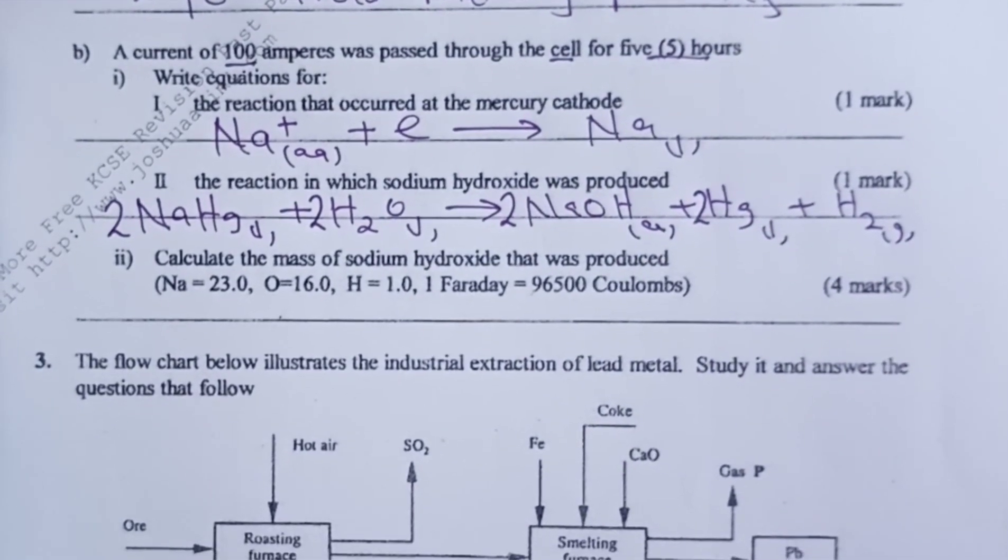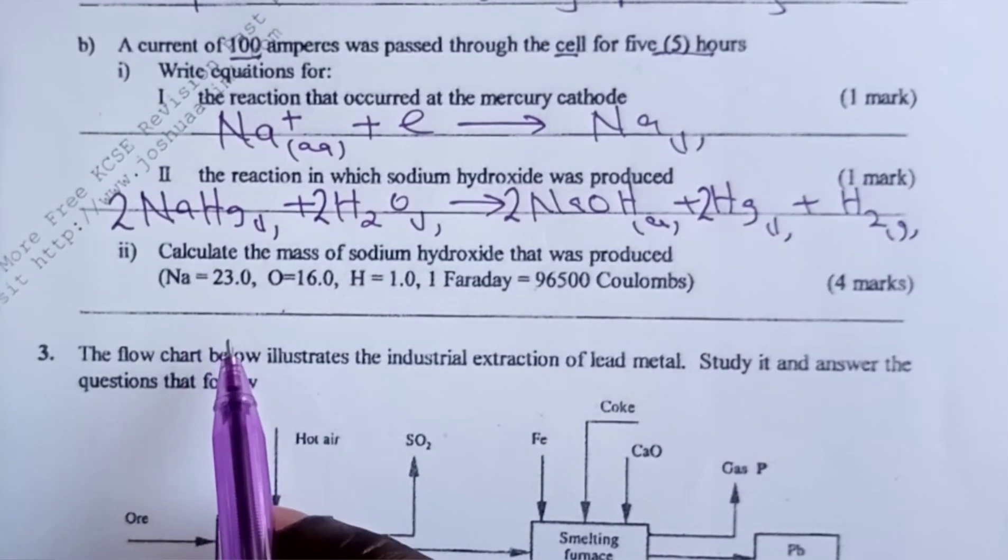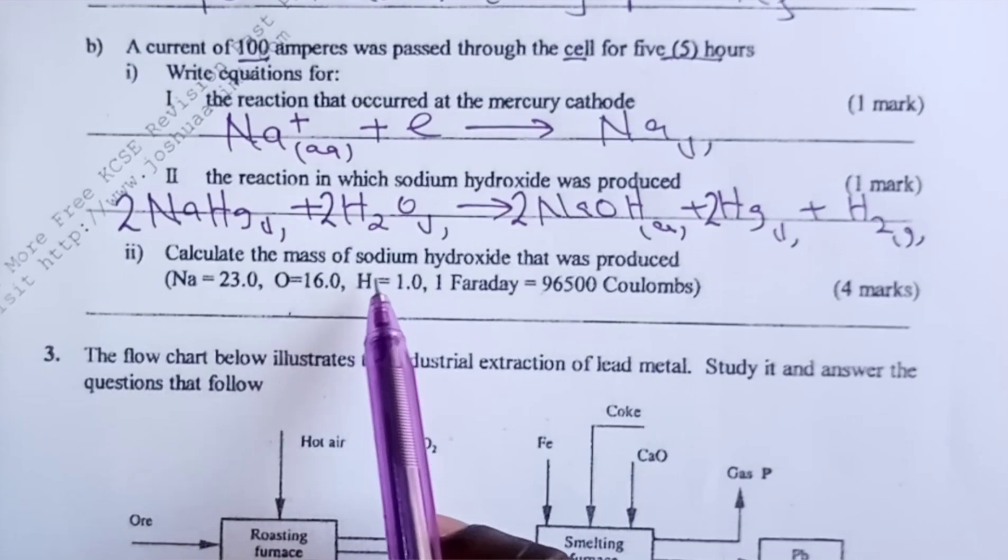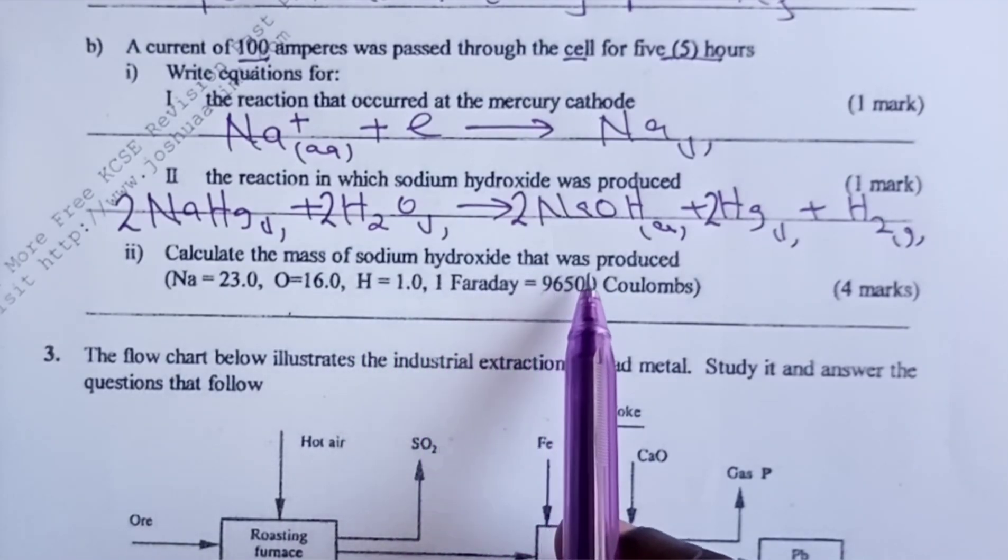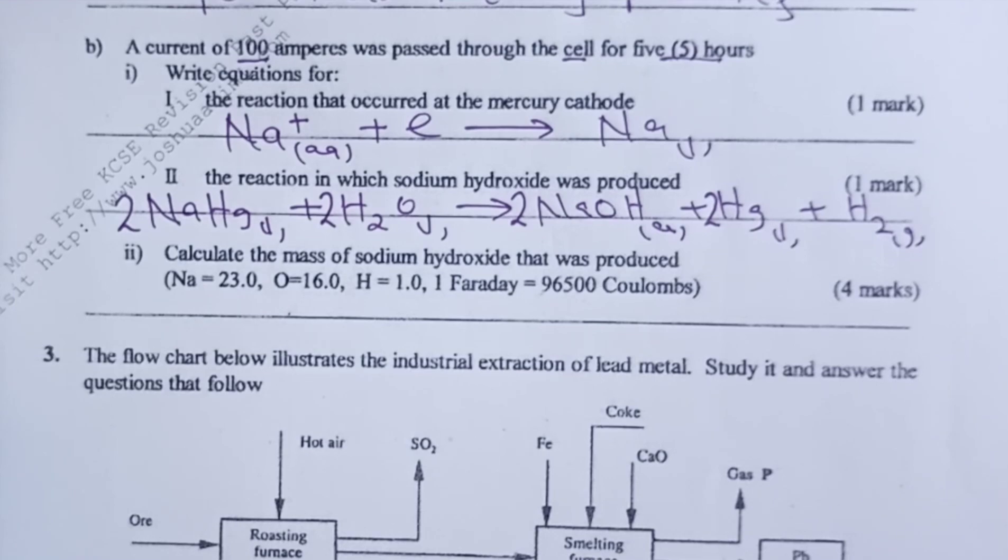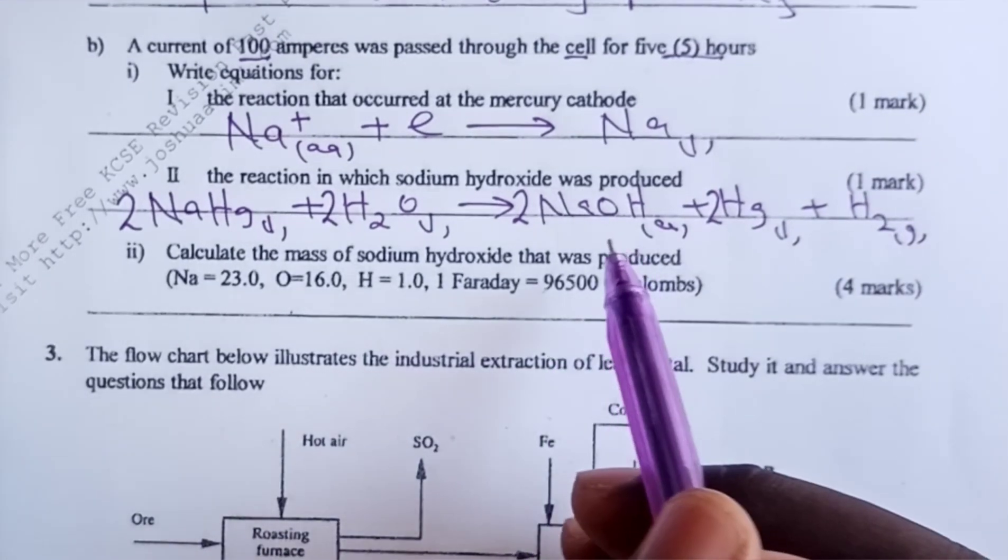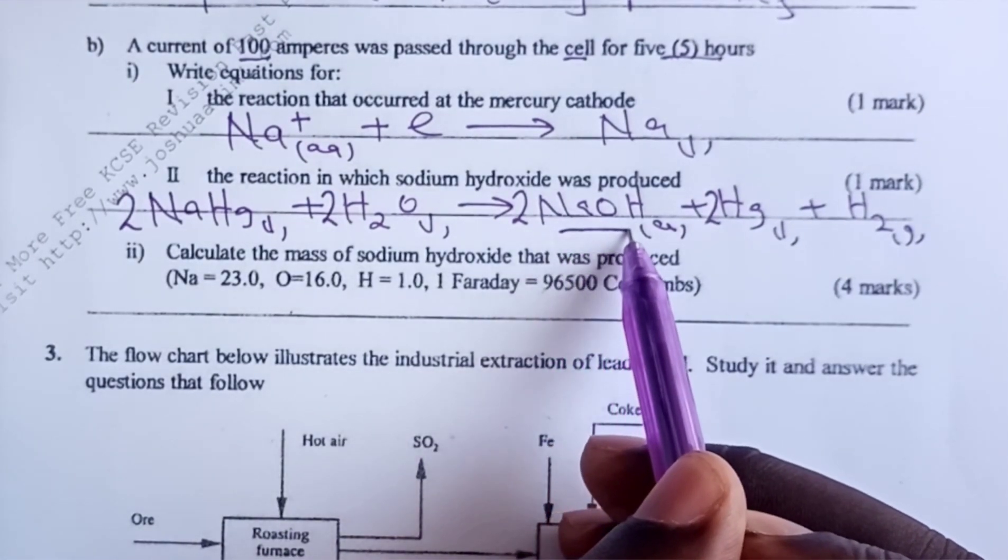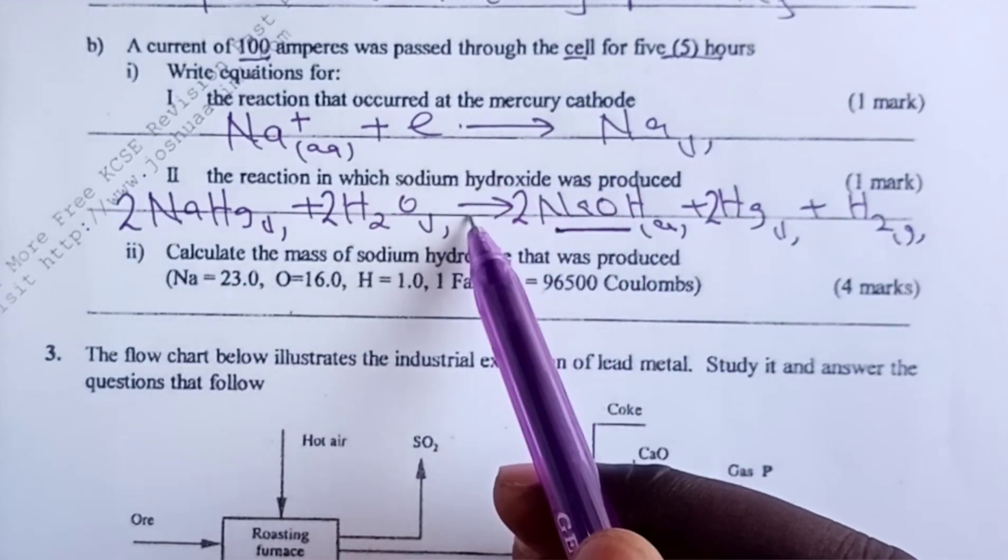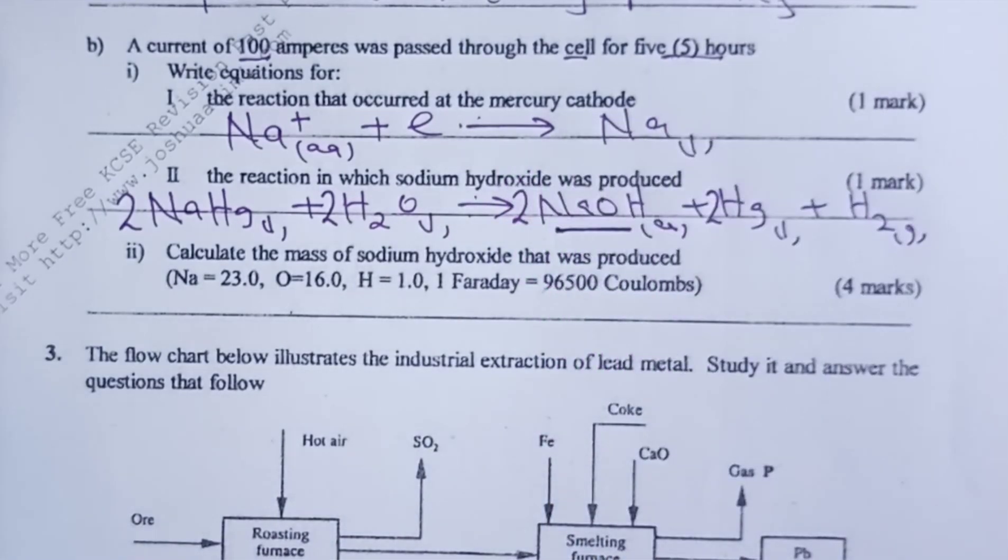Finally, based on these two equations, we are now told to calculate the mass of sodium hydroxide that was produced. Because of space, I'll introduce a new working area. For us to get the mass of sodium hydroxide that was produced, we need to review our two equations that we have just written.